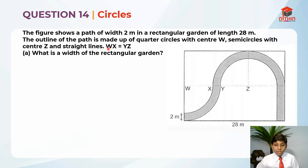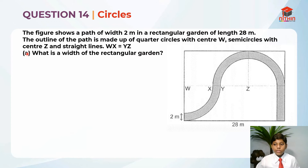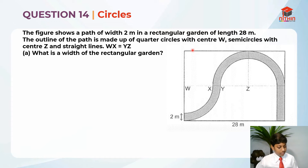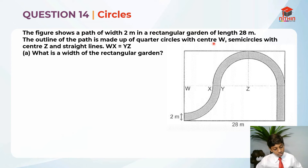WX equals YZ. So for part A, they're asking us: what is the width of the rectangular garden? This is the image over here — this is what they have given us to solve this question.